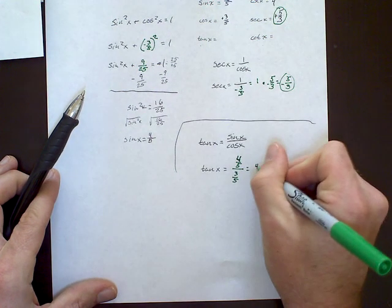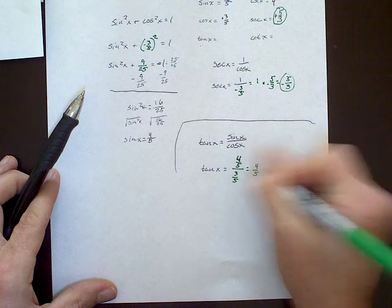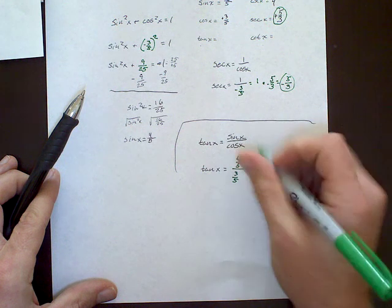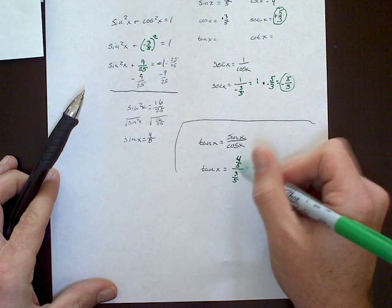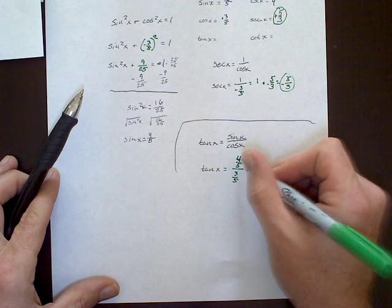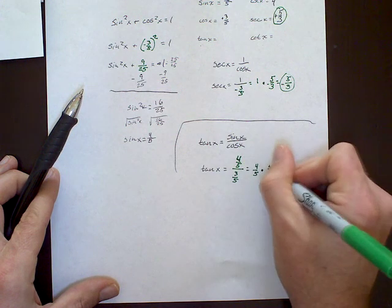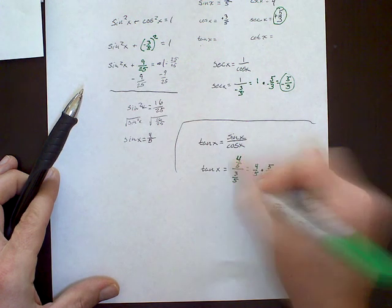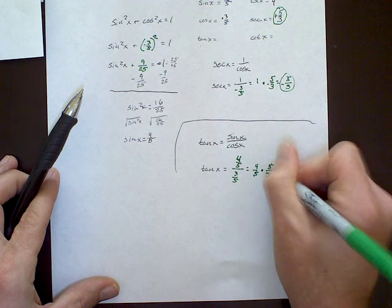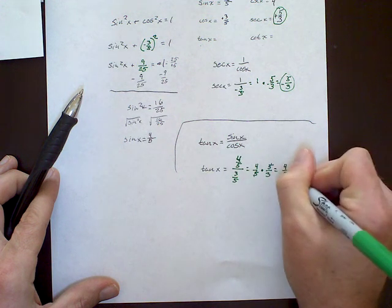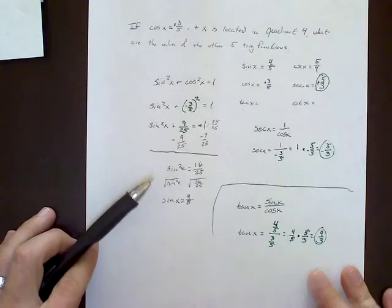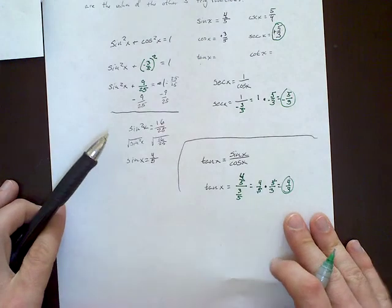So now all we have to do to figure out tangent is just this simple division of fractions. So again, we copy the top, because remember, to divide fractions, you copy dot flop. So we got that, then we flip the bottom, so that became 5 over 3. Cross cancel and multiply, we get 4 over 3.